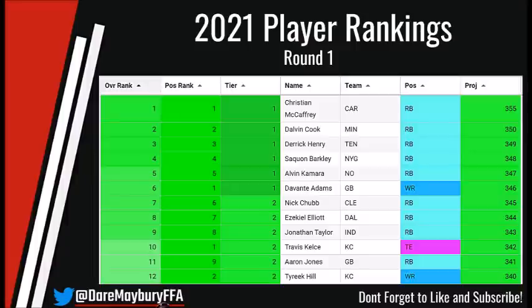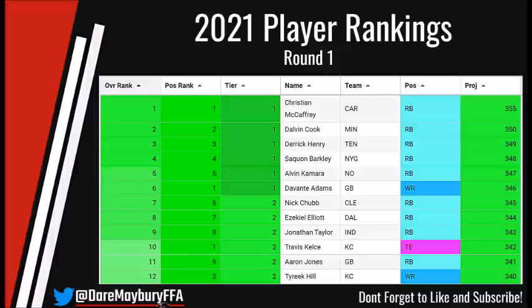Moving past Adams and towards the back of the first round, we have four more running backs: Nick Chubb, Ezekiel Elliott, Jonathan Taylor, and Aaron Jones. Each one of these running backs is undeniably safe, and each has top-5 upside as well. The only thing I would say is that Ezekiel Elliott's fantasy value is going to heavily rely on the health of Dak. This ranking is more optimistic on the health of Dak because we did see the potential downside from Ezekiel Elliott if the Dallas Cowboys struggle at quarterback. A similar situation could be said about Jonathan Taylor.